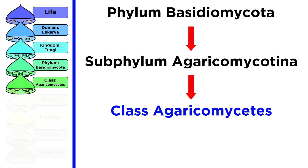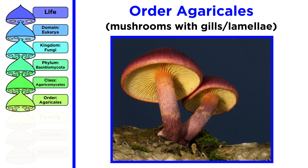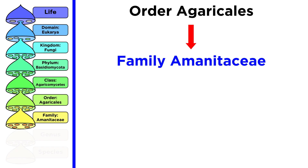This falls into the class agaricomycetes, and then is part of the order agaricales. Any order will have the ending alis. Generally, the order agaricales describes any mushroom with gills or lamellae. Within the order, the fly agaric is further classified into the Amanitaceae family. Whenever the taxon name ends with A-C-E, that name describes a taxonomic family.